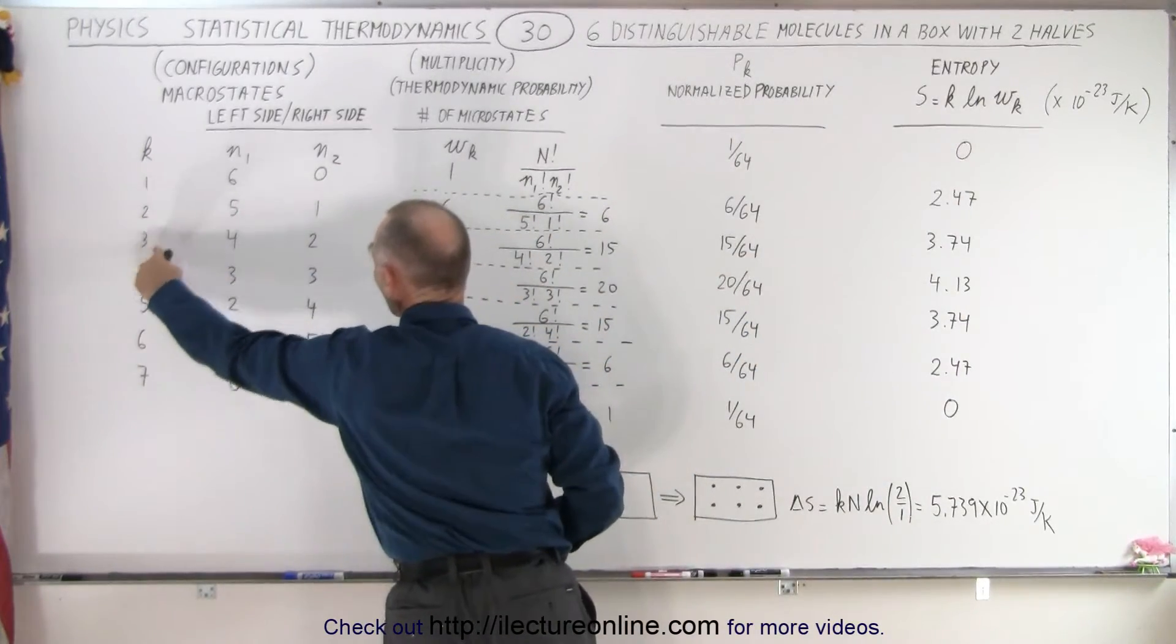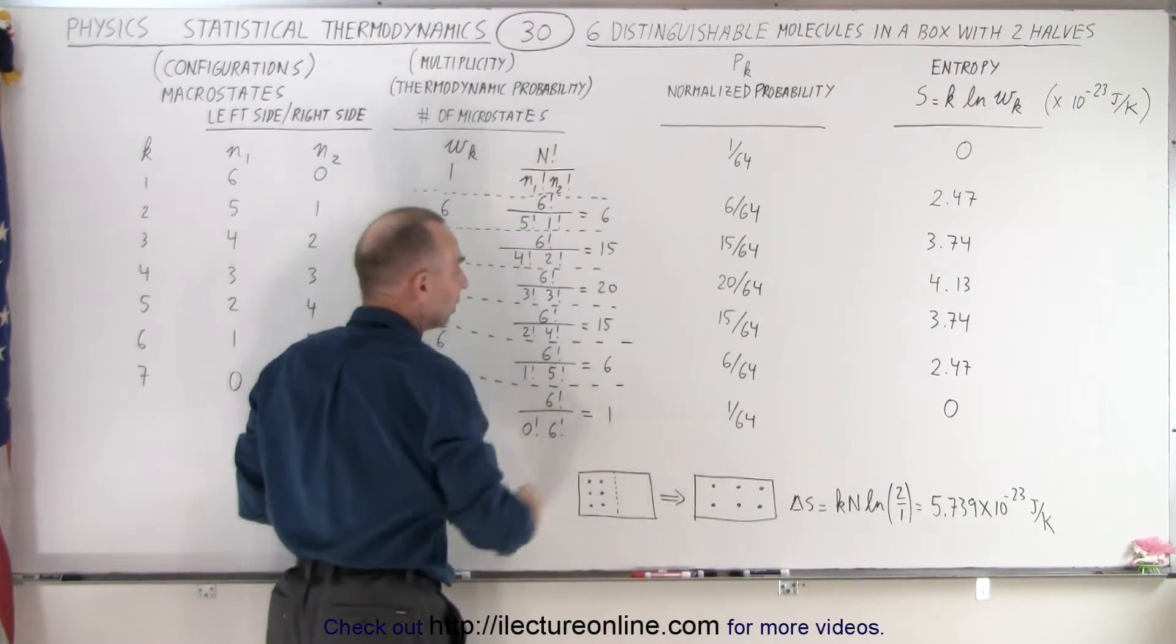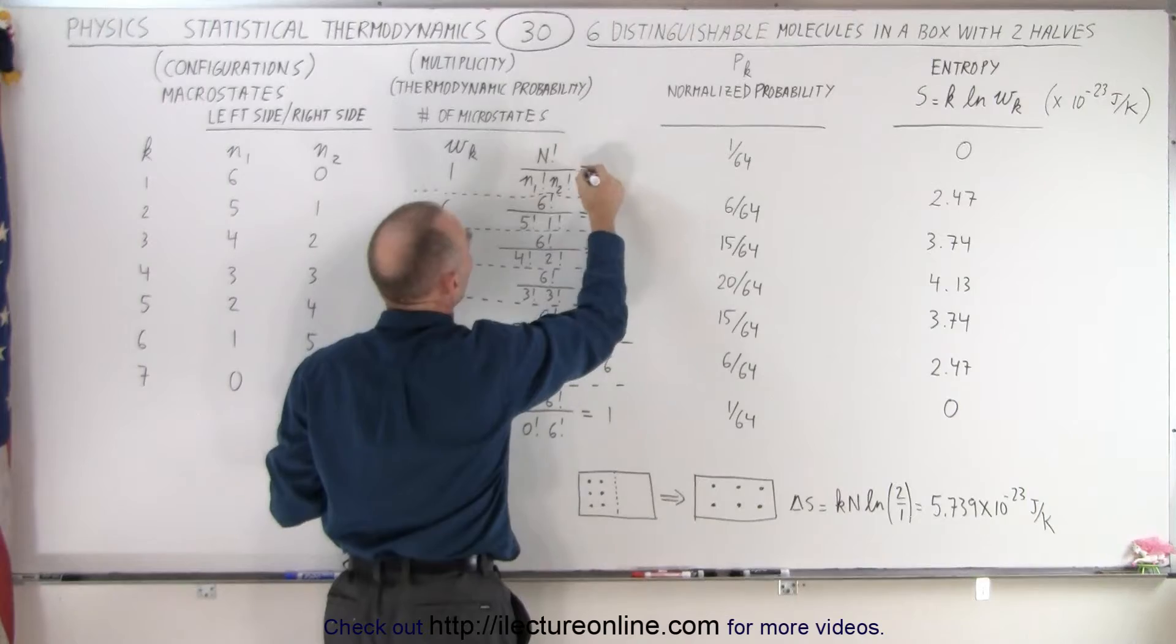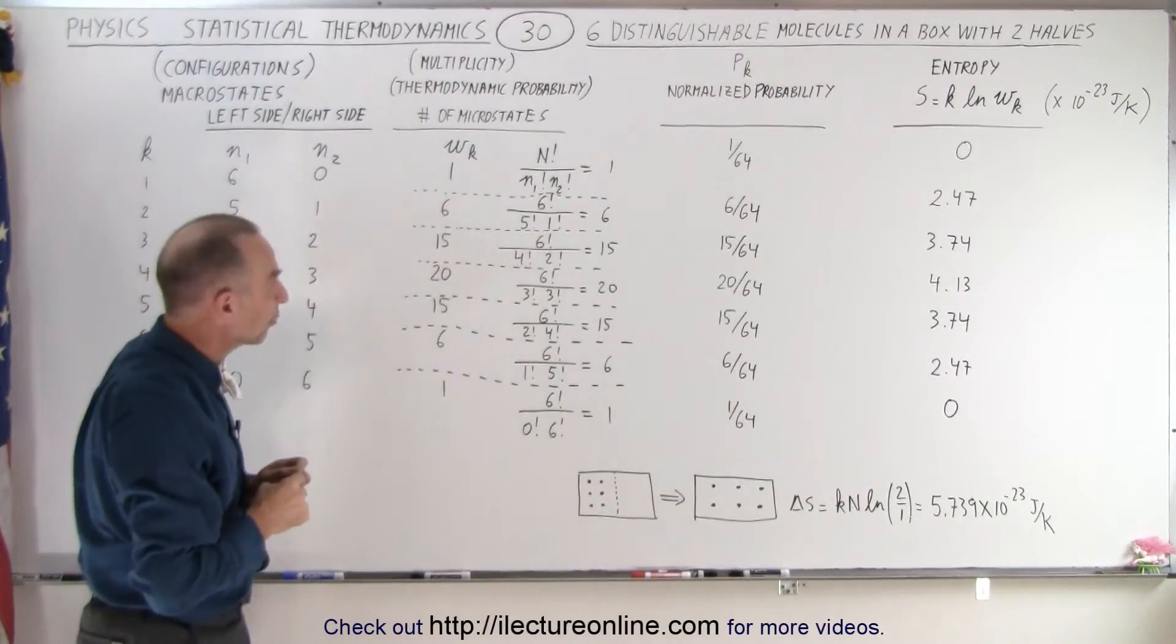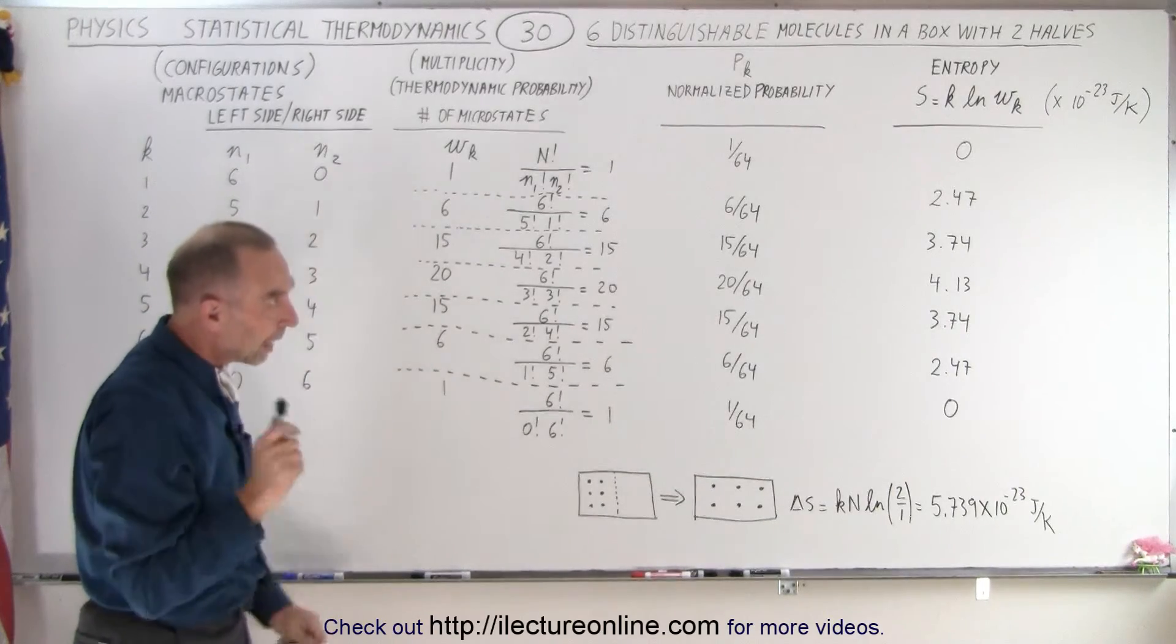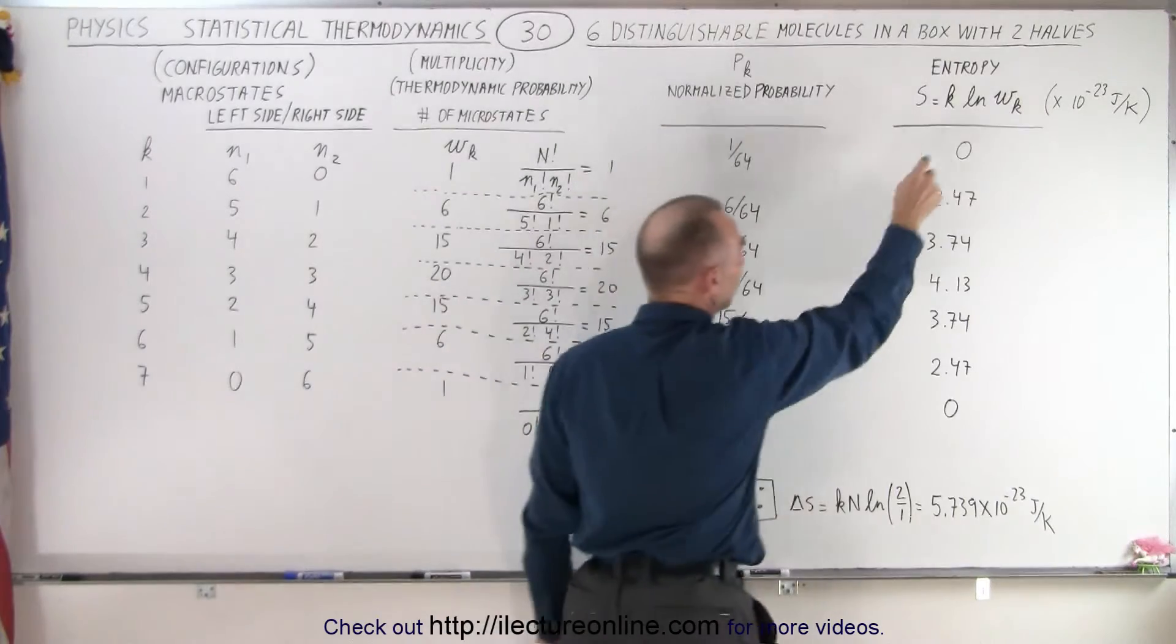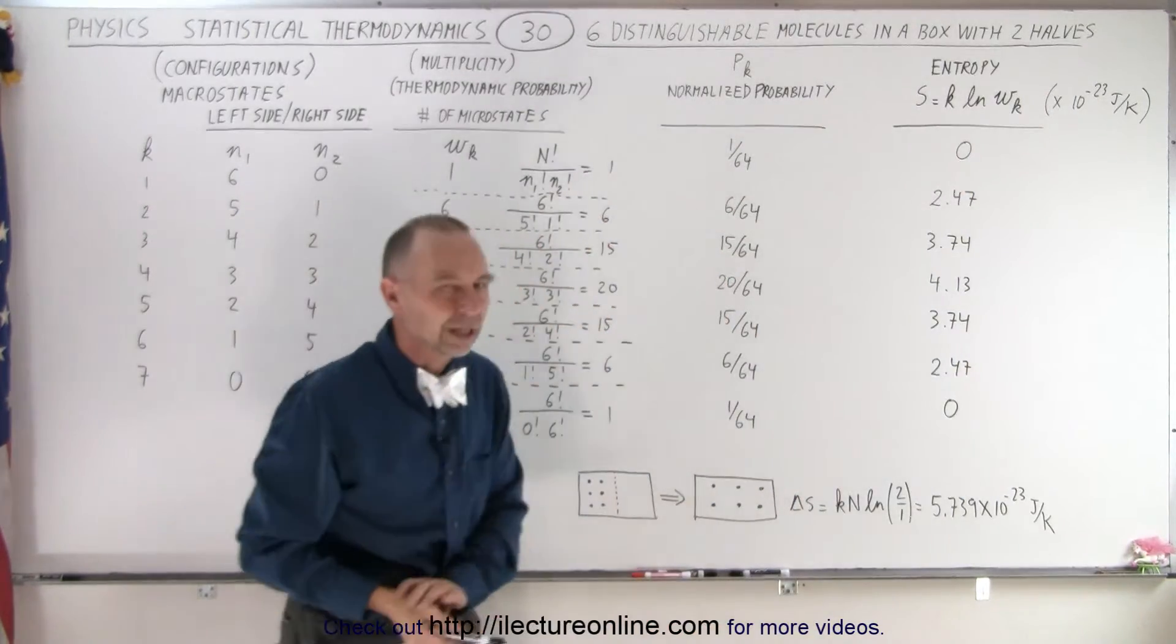We're either in 1, 2, 3, 4, 5, 6, or 7. And that gives you any one of these. So this would be equal to 1 for the first one. So there's 7 different numbers of microstates for the 7 microstates. Now if we calculate the entropy for each of those, those are the entropies times 10 to the minus 23 joules per Kelvin.